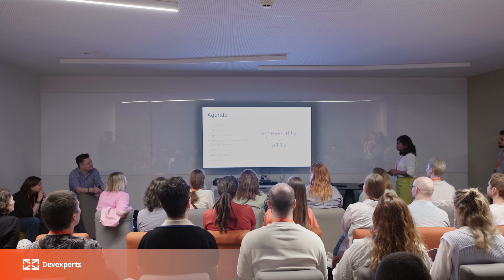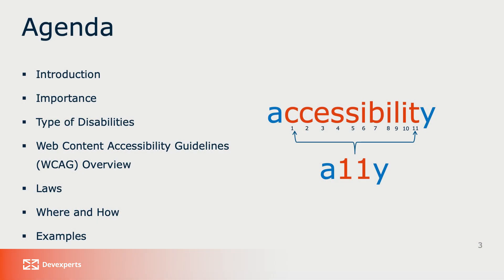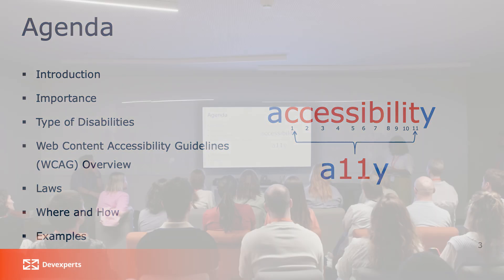So, what we are discussing today: first, we will cover some introductory parts. Then we will answer all the 'why' questions — why accessibility is important. Then we will discuss types of disability and how people interact with digital content. Then we will see the Web Content Accessibility Guidelines, some laws, the legal aspects, where and how you can start accessibility in a work project, and some examples you might face.